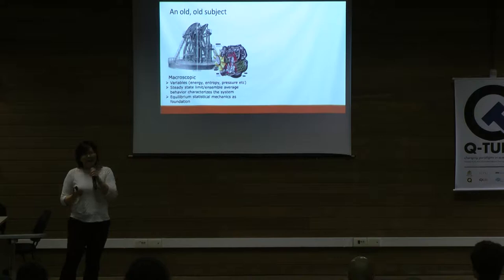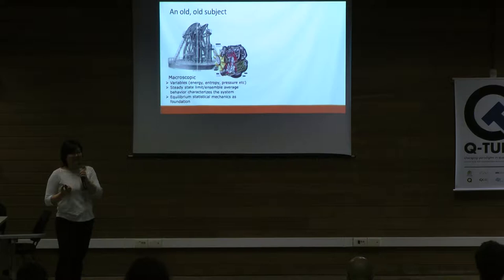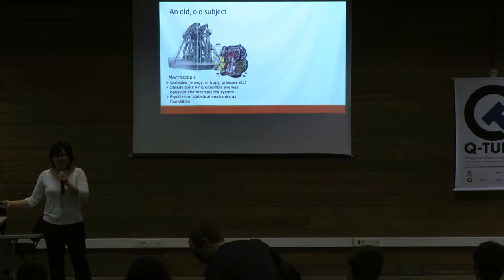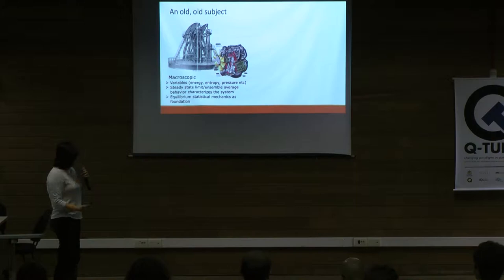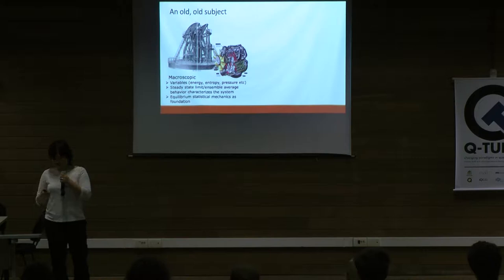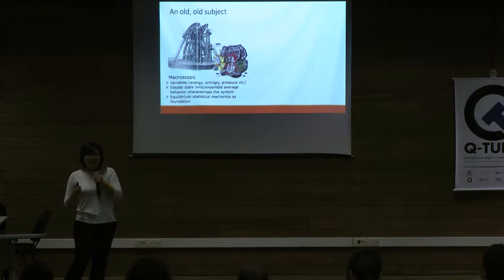Thermodynamics started as a very empirical branch of physics. Think about the second law, for example — historically it's been formulated in many different ways: you have the Clausius statement, the Carnot statement, the Kelvin statement, and they are all actually related to each other. It was only a bit later, when equilibrium statistical mechanics was developed, that people began to re-derive and ground these observations from basic assumptions. Thermodynamics has since evolved alongside the rest of physics, being refined to suit new physical systems.